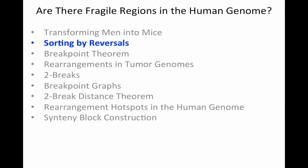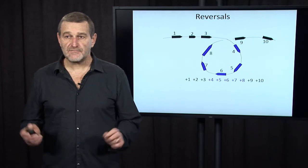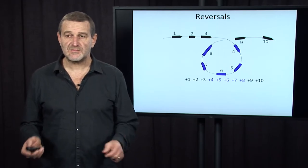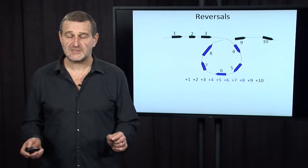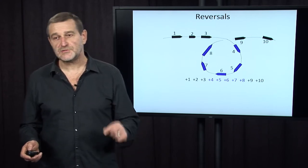We'll now talk about the algorithmic problem of sorting by reversals. Let's start from a short chromosome consisting of just ten blocks, and we'll number them in the order one, two, three, to ten.